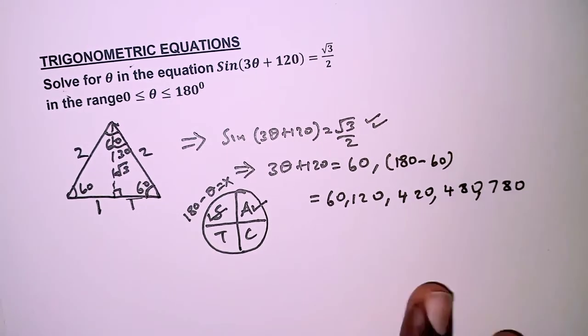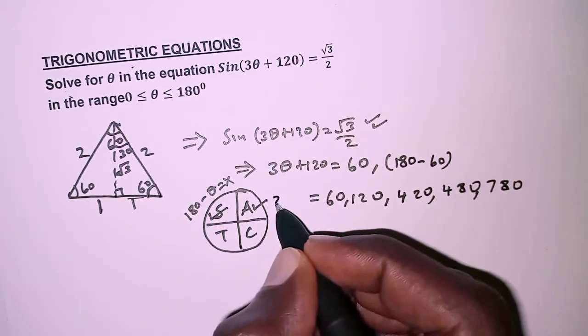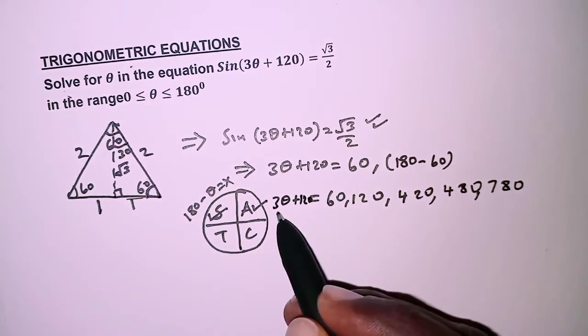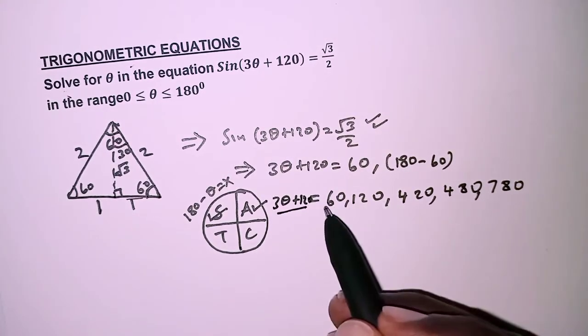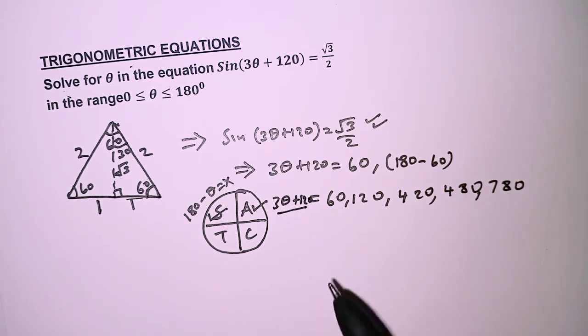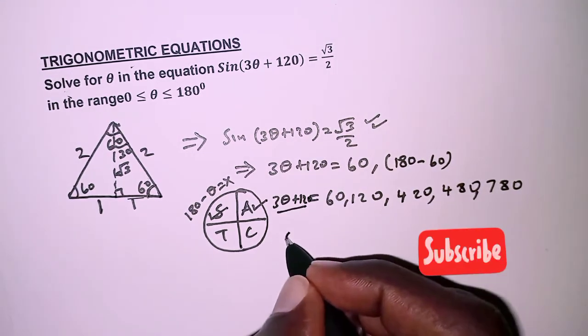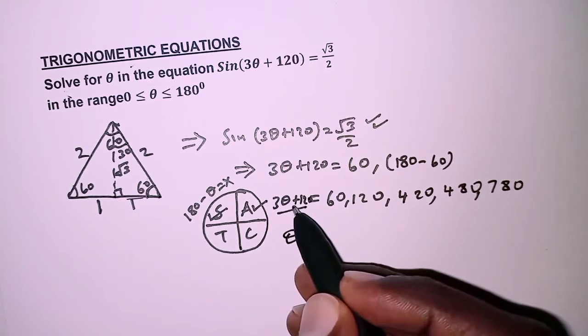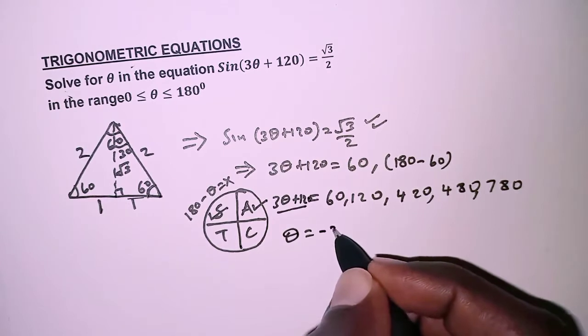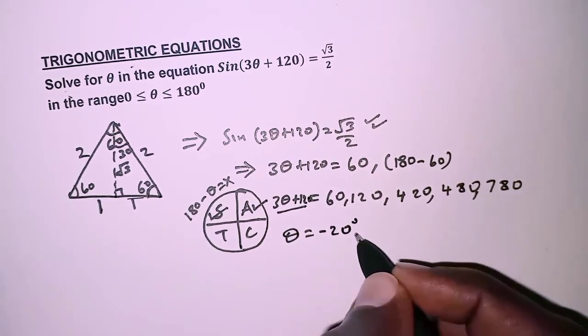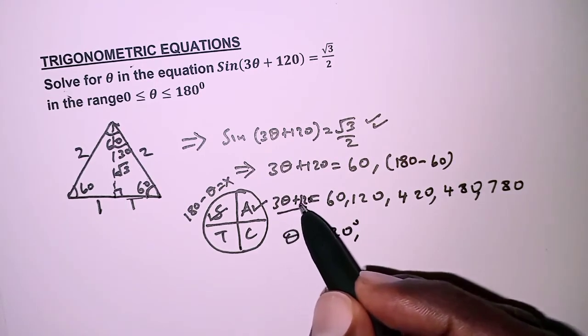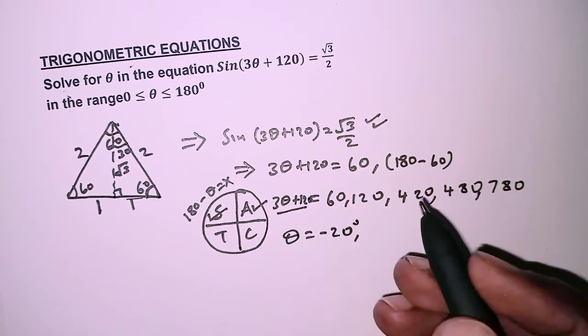Remember this is equated to 3θ + 120, so we are going to take 3θ + 120 and equate it to each and every value on the right hand side, then get the values of theta. When 3θ + 120 = 60°, theta is going to become -20°. When equated to 120°, we have 3θ = 120 - 120 = 0, so θ = 0°.